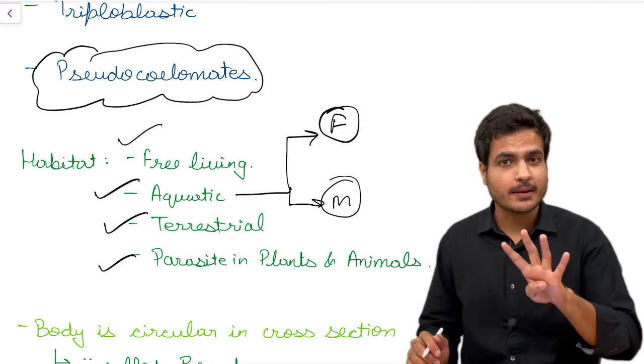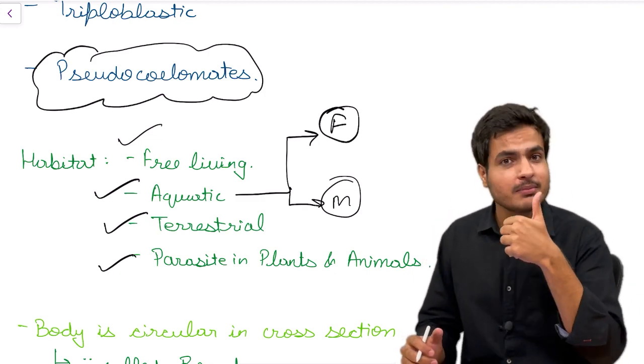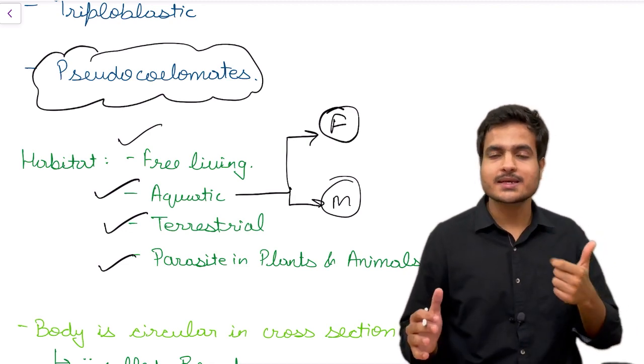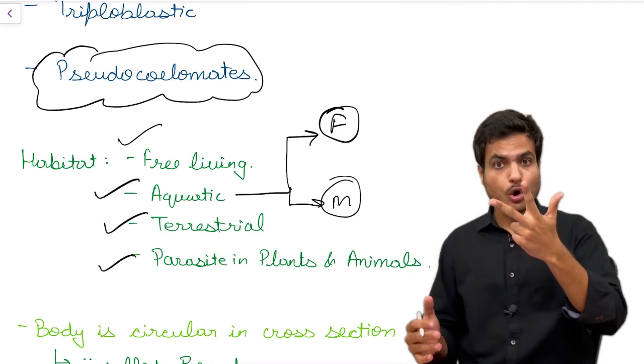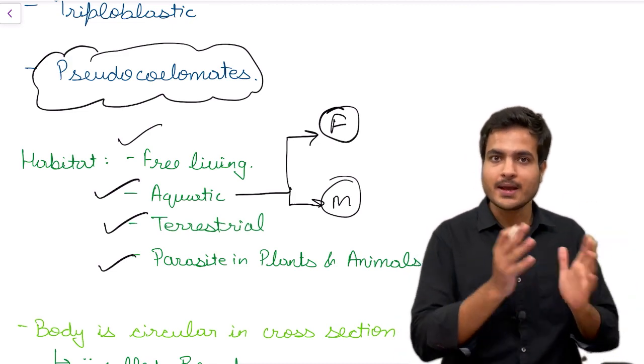So we have four important habitats for our roundworms. First, they can be free living over any place. Second, they can be aquatic or terrestrial or live as a parasite inside both plant and animal bodies.